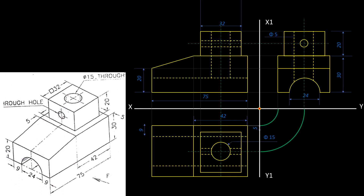Let's draw the orthographic projection. The front view on the right side has a 20mm height, 75mm length, 30mm height, and 42mm line. There is a square piece on the right side that is 32mm — meaning a 32mm base edge and 20mm height.